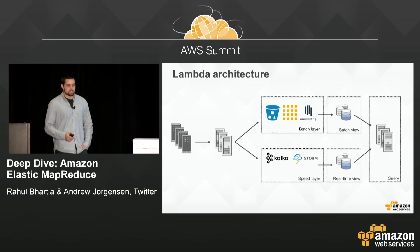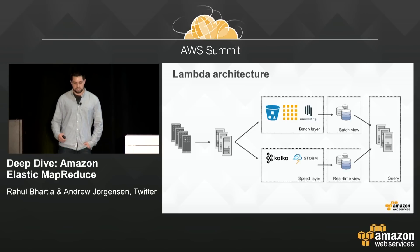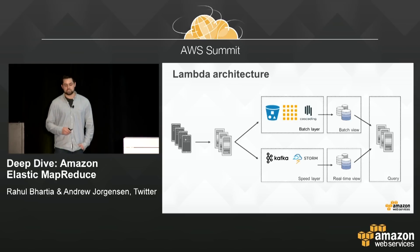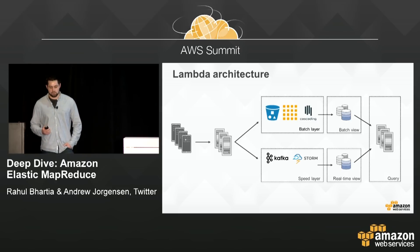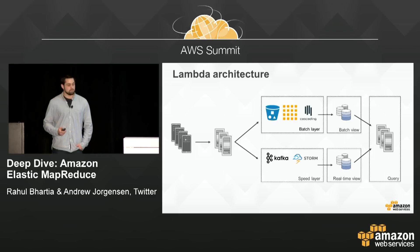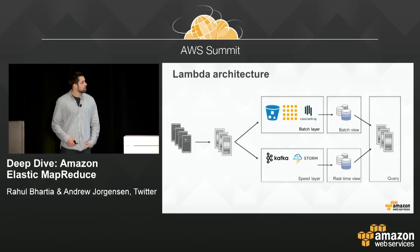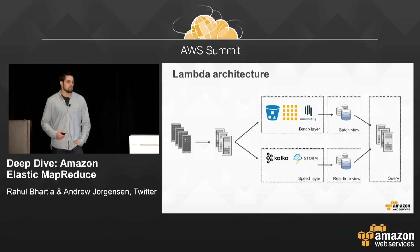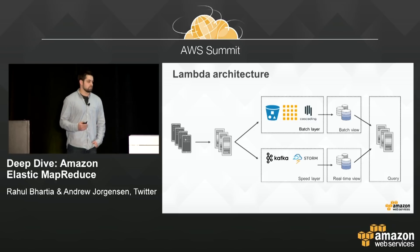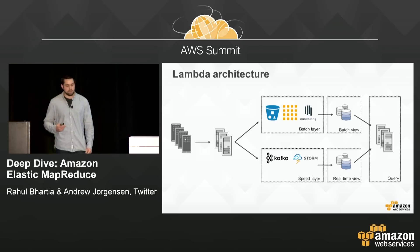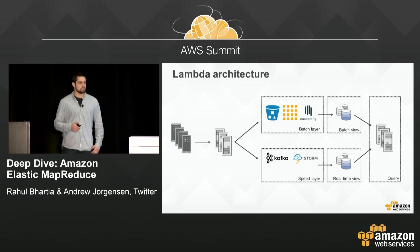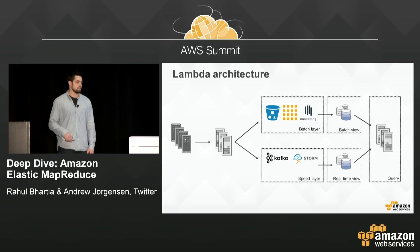We're architected in what's called a Lambda architecture. On the left-hand side, devices send us data which splits into two streams. The top stream is the batch layer — responsible for keeping an immutable, append-only raw dataset — and we layer on technologies like EMR to do batch compute on that data to provide metrics for customers. The bottom stream is the speed layer, responsible for processing events as they come in to provide a real-time view of data to users so they see current data without any staleness. At query time, you combine the batch and speed layers to answer any question.